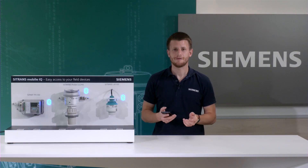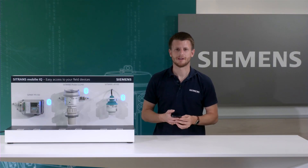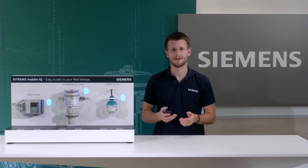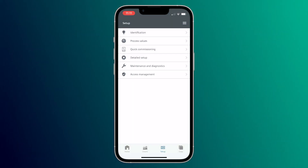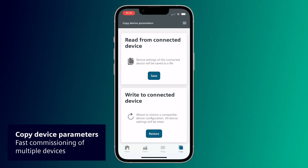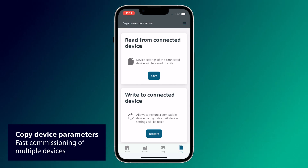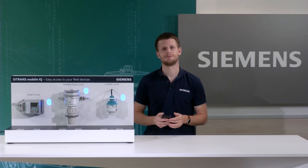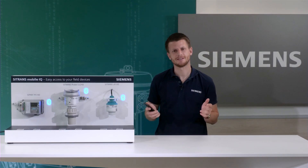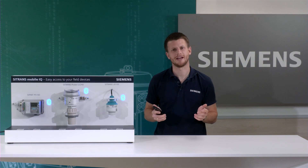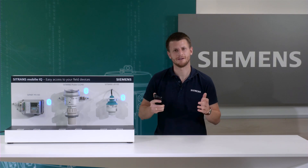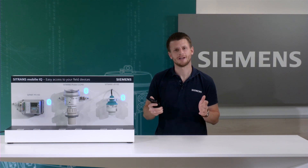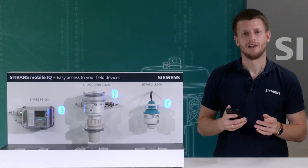Another function of the SITRANS MobileIQ app is the Copy function. With this, all device parameters can be read and copied to other devices. This is a great function especially if you have lots of same devices with the same application, and it saves you much time.